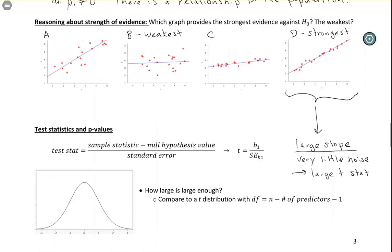By this point, you're used to this question: how large is large enough? We need something to compare it to. We're going to compare it to a t-distribution. The degrees of freedom is n minus the number of predictors minus 1. This semester, we're only looking at situations with one predictor, so our degrees of freedom is n minus 1 minus 1—n minus 2 degrees of freedom. This shows a t-distribution with n minus 2 degrees of freedom.